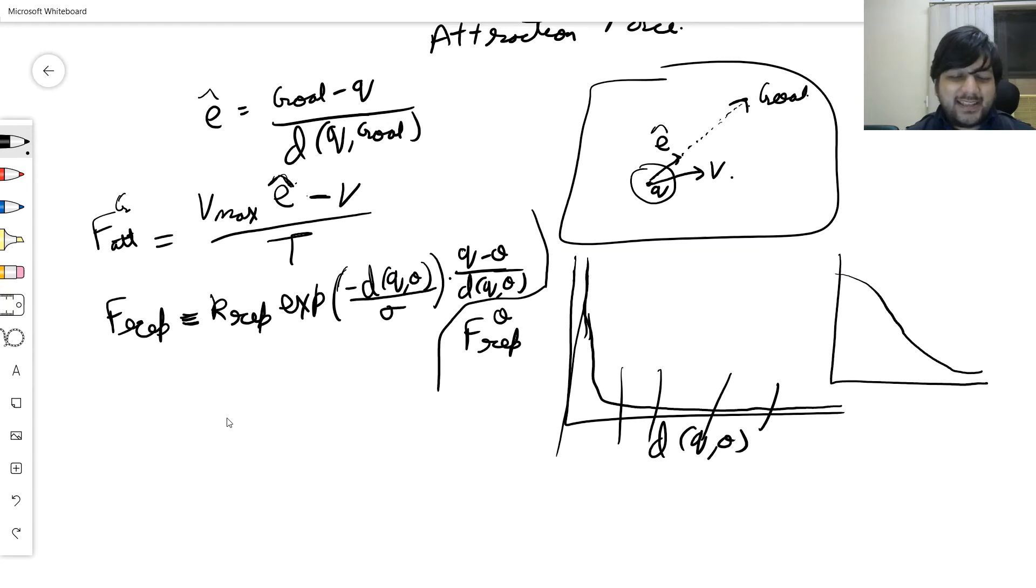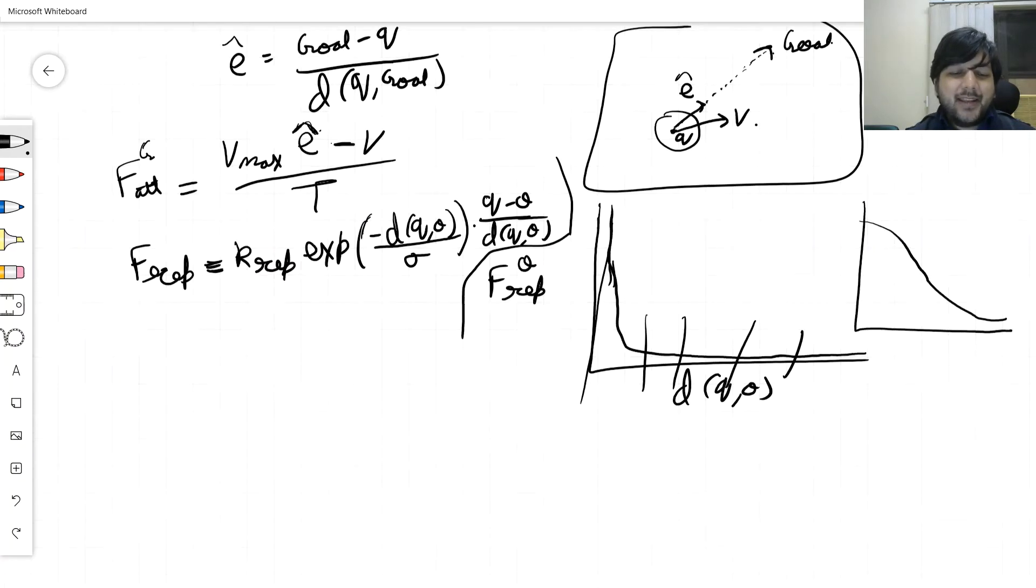And now what I do is additionally account for the spatial occupancy. So I'm saying that I'm here, somebody here in my motion direction I'll be very cautious of. Here I'll not be cautious of, here I'll not be cautious of, back I do not care.